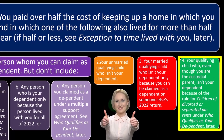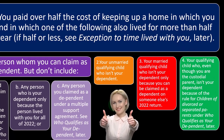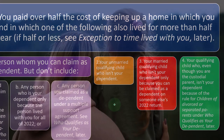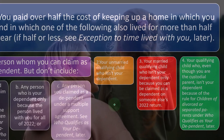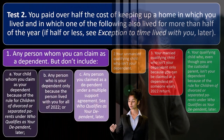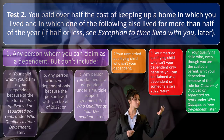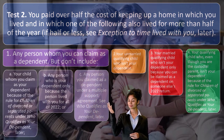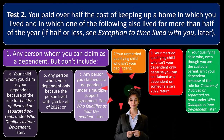Number four is your qualifying child who, even though you are the custodial parent, isn't your dependent because of the rule for children of divorce or separate parents. There are a lot of caveats here. The general idea: Test 1 covers your parent (with less strict living requirements) and Test 2 covers other dependents, oftentimes a child but not necessarily.